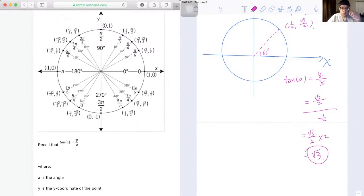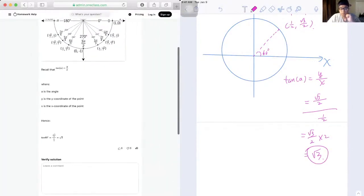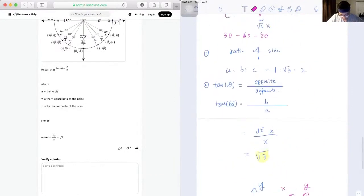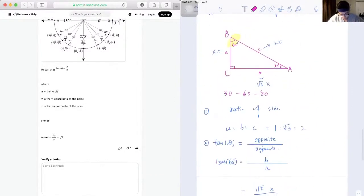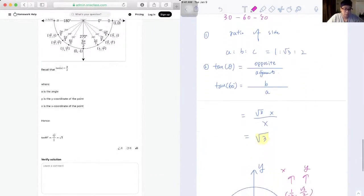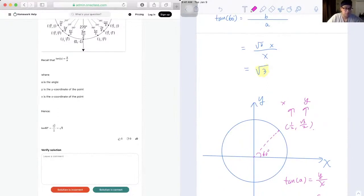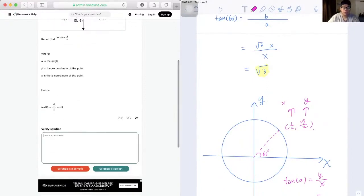So, okay, yeah, so either way works, you can use the way I showed you here, or you can use the unit circle way. I mean, either way will give you the correct answer, which is √3. Okay, so let's leave a comment. Solution is correct. We're done.